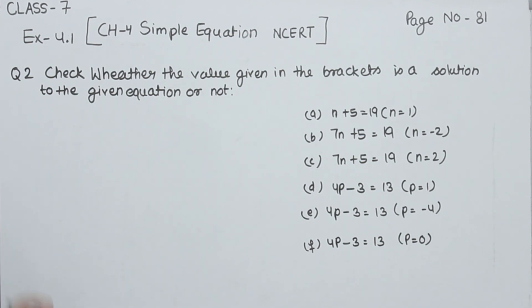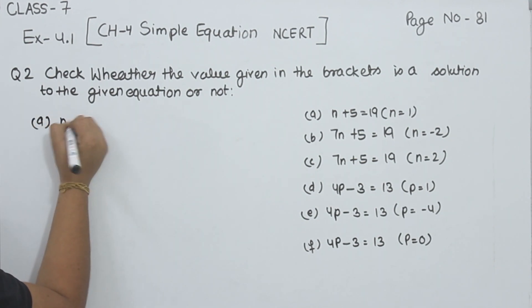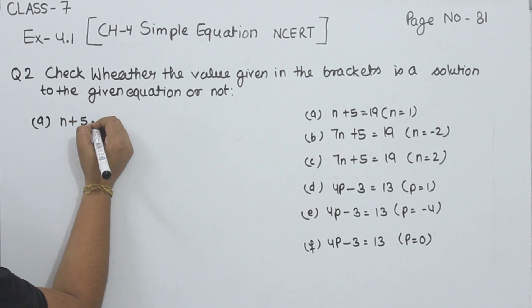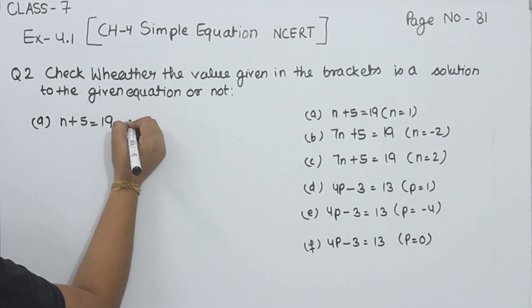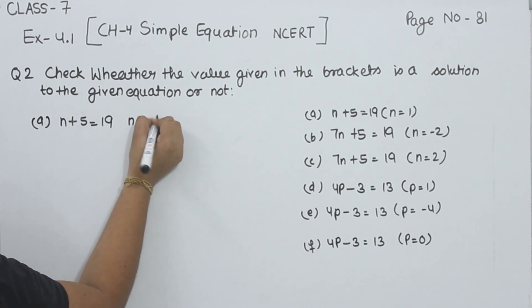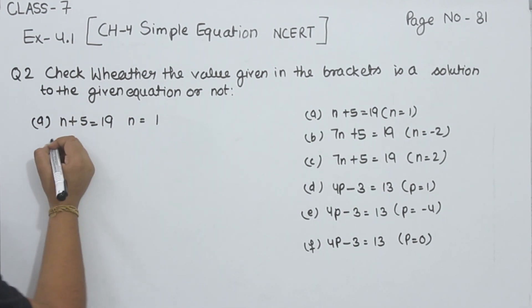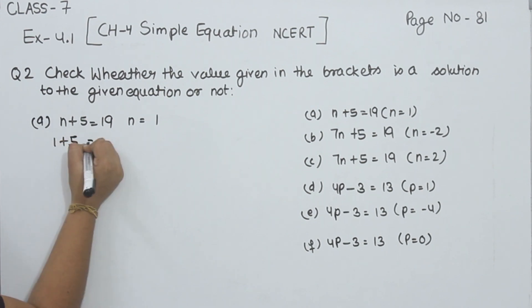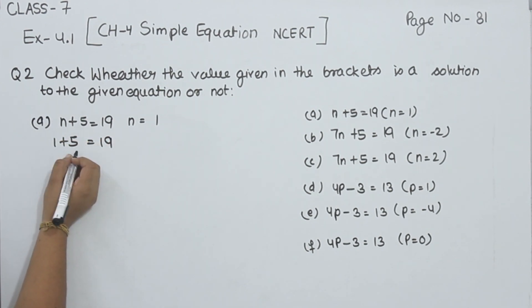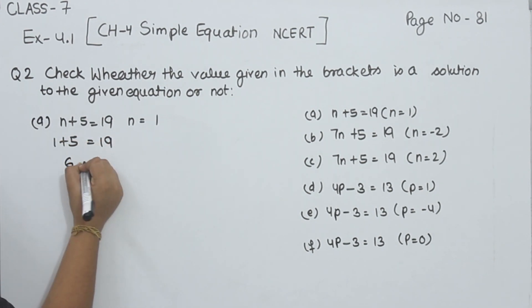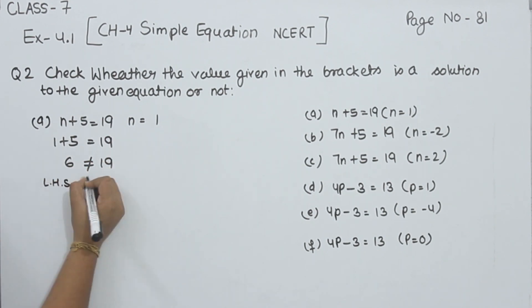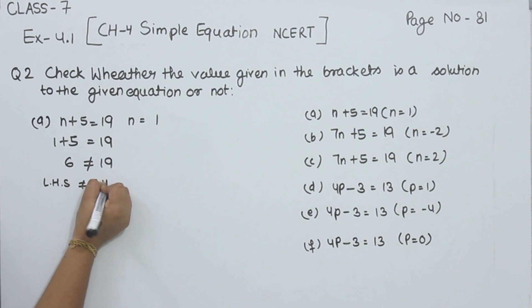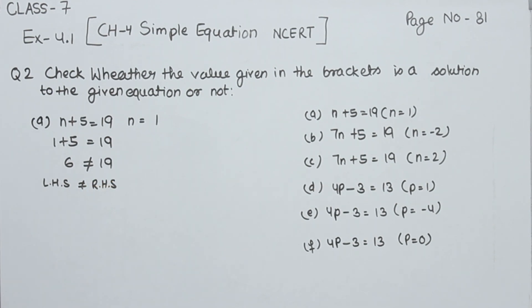So start with part A. N plus 5 is equal to 19, where N is equal to 1. So at the place of N, we are going to put the value 1. So 1 plus 5 is equal to 19. Now 1 plus 5 is 6, and 6 is not equal to 19. So left hand side is not equal to right hand side.